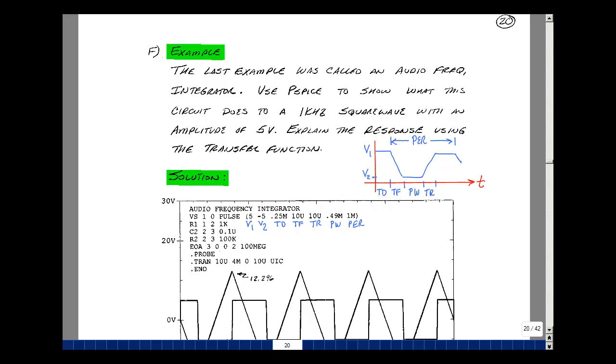This last example, we call the circuit an audio frequency integrator, and this is because it had a Bode plot with a slope of minus 20 dB per decade from about 16 Hz to 10 kHz, which is roughly the audio band. Let's use PSPICE to show what this circuit would do to a 1 kHz square wave with an amplitude of 5 volts. Let's see if we can explain the response using our transfer function.